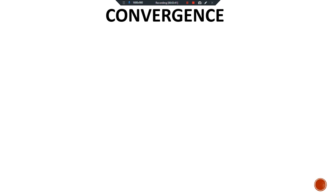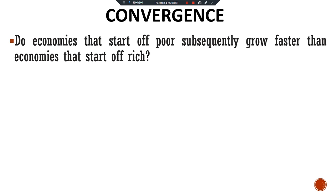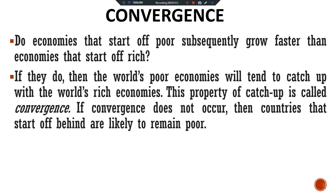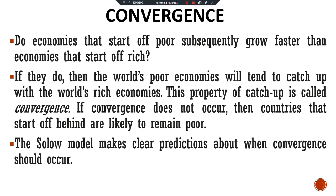In particular, one of the main questions that arises is: do economies that start off poor subsequently grow faster than economies that start off rich? If they do, then the world's poor economies will tend to catch up with the world's rich economies. This property of catch-up is called convergence. If convergence does not occur, then countries that start off behind are likely to remain poor forever. The Solow model makes a clear prediction about when convergence should occur.